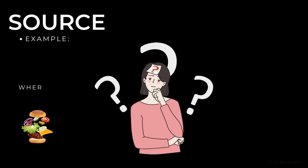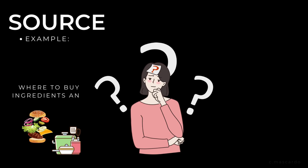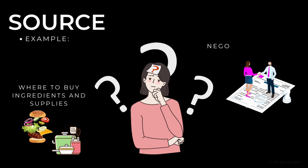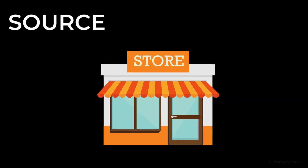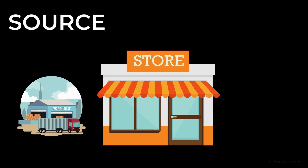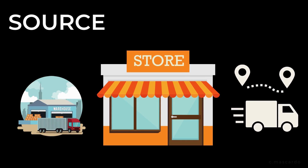Example for source: You need to decide where you will buy your ingredients and supplies. You will also need to negotiate with your suppliers in order to get the best prices, along with the best quality and service. It might be better to have suppliers that are close by so that transporting products is fast and cheap, or it might make sense to choose suppliers that are farther away but can provide the products at a lower cost or in larger quantities.